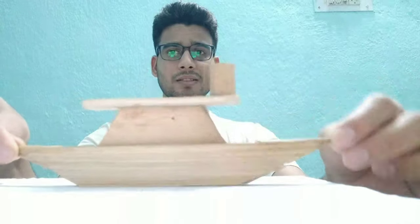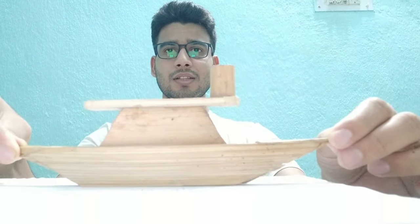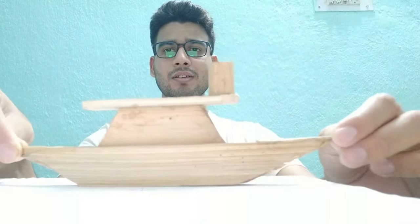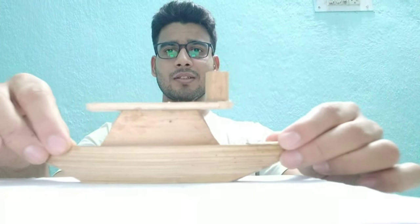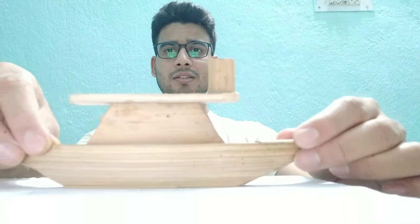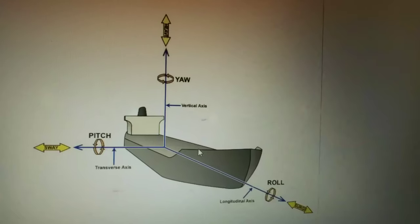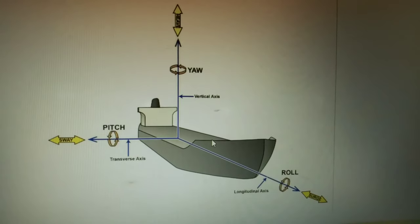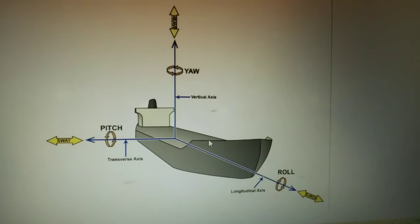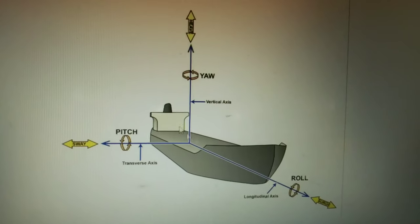So once again to recap: the motions are pitching, rolling, yawing, swaying, surging, and lastly heaving. You saw the miniature of the ship regarding all the motions, and for better understanding you can see this diagram.